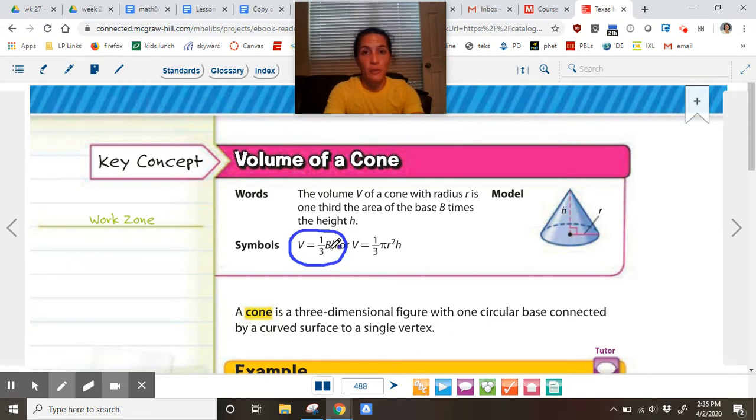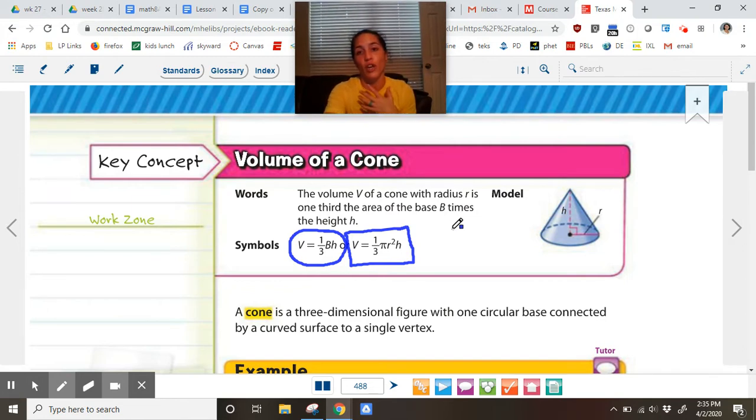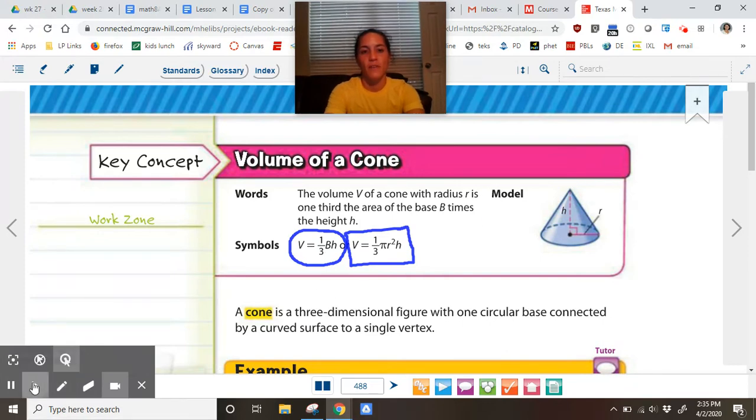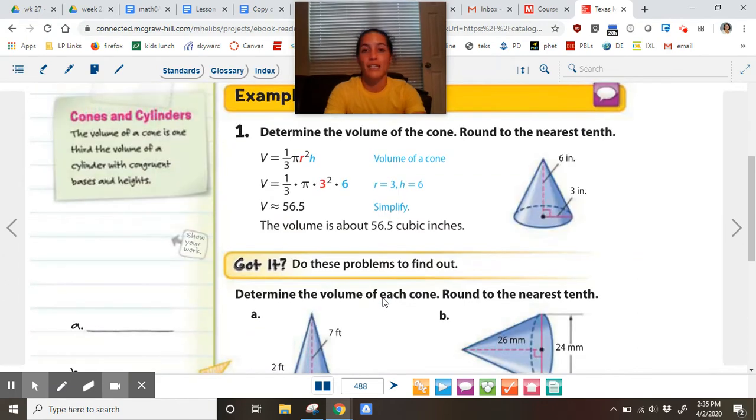So it's very similar to the cylinder. Again, capital B stands for base area times height, and we just have a third in front of it. Here is the formula we're going to be using today: V = 1/3πr²h. A cone has a circular base but then it's got round surfaces that come to a vertex at the top. It does not have two bases, just one.